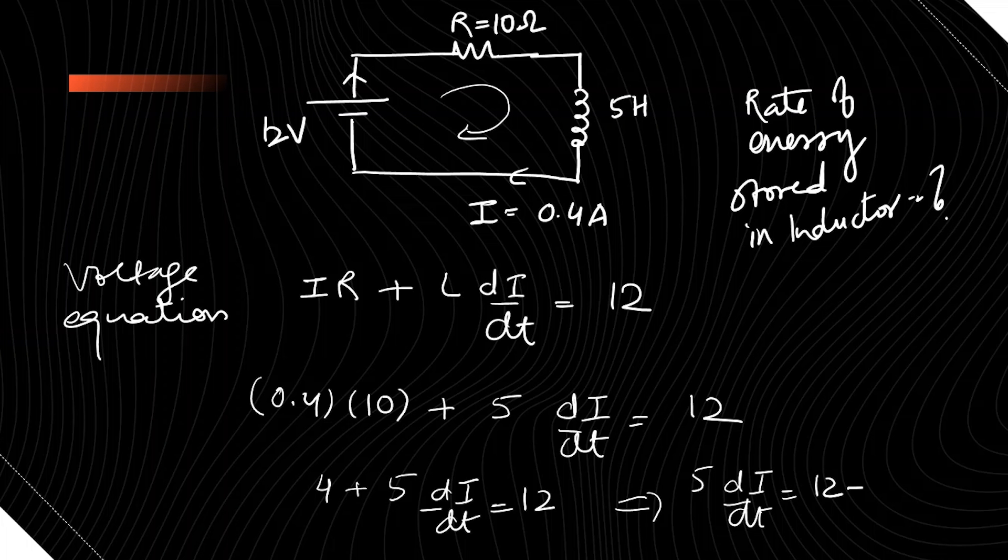5 di by dt is 12 minus 4 which is 8, so our di by dt will come out to be 8 by 5 ampere per second. So to find out the rate at which the energy is being stored...